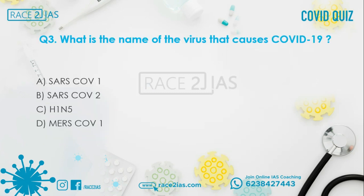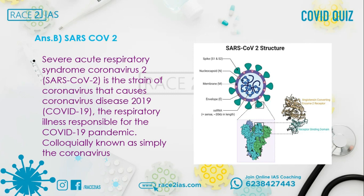Question number 3: What is the name of the virus that causes COVID-19? Option A: SARS-CoV-1. Option B: SARS-CoV-2. Option C: H1N5. Option D: MERS-CoV-1. The right answer is Option B, SARS-CoV-2. Severe Acute Respiratory Syndrome Coronavirus 2 is the strain of coronavirus that causes coronavirus disease 2019, or COVID-19.